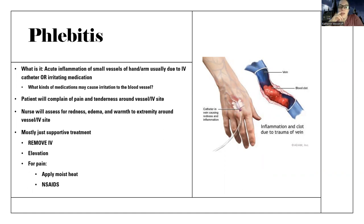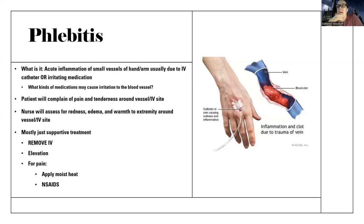Effectively what's going on is that the small blood vessels - like the superficial vessels, especially in the arm and the hand - are going to get irritated. They're usually going to get irritated because there's a device inserted like an IV catheter, or there's an irritating medication. This could be stuff like potassium, some antibiotics, Phenergan - anything listed as a vesicant can be irritating to the blood vessel. It could be irritated from both the catheter and the medications. It's an issue in the superficial blood vessels, and it can actually lead to eventually clots and other things.